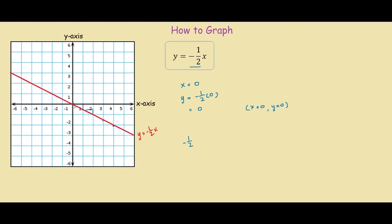So it has a y-intercept at (0, 0) and a slope of negative half. You can get all this information from the equation of the line. You can also think of negative half x as negative half x plus zero — normally that second number is what we call the y-intercept.